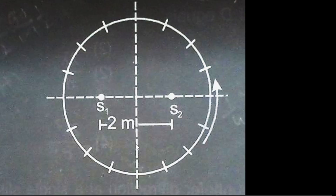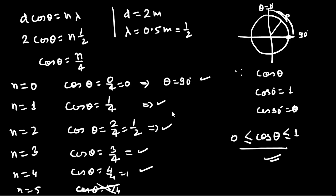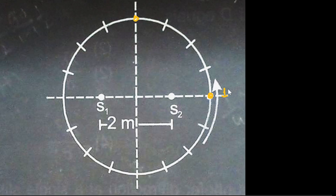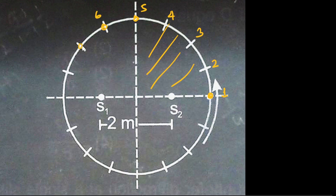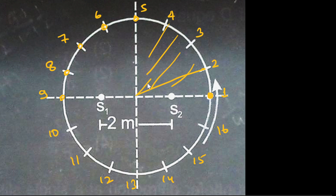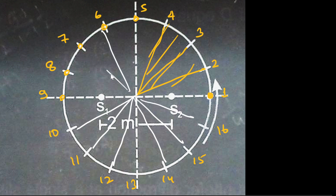So from 0 to 90 degrees I get 5 maxima in this quadrant. Now considering all four quadrants — the maxima at theta = 0 and theta = 90 degrees are shared between adjacent quadrants, so counting carefully across the full circle: there are 5 maxima in each quadrant, but the boundary ones are common. The total comes to 16 maxima around the full circle.